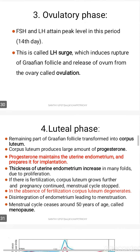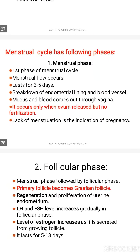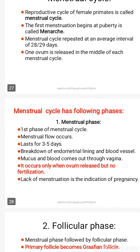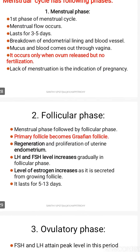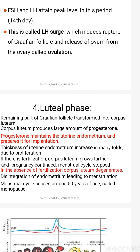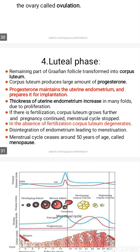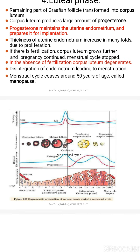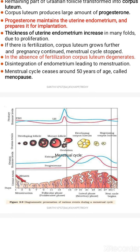This topic can be asked for five marks in the board exam. You have to remember the different phases: menstrual phase, follicular phase, ovulatory phase, and luteal phase. Diagram-based questions can also be asked for five marks. Hope you understood — thank you, we will meet in the next class.